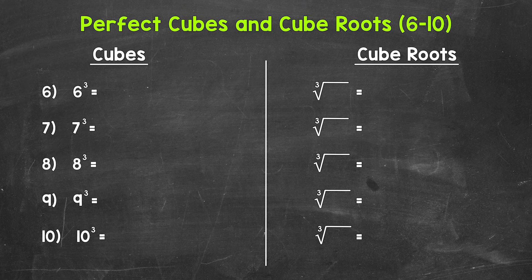Remember, cubing a number means to multiply a number by itself three times. When it comes to cube roots, cube roots are the opposite, the inverse, of cubing a number. So we need to think: what number multiplied by itself three times will equal the number under the cube root symbol?